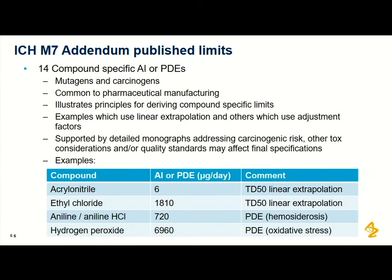It's important to emphasise that these exposure limits are very much based on carcinogenic risk. Sometimes other toxic considerations need to be looked at, so you need to look at the whole data package together. Your final specifications may also be driven by other quality standards. If you have an impurity exposure limit in the milligrams per day range but batch testing shows the impurity is present at micrograms per day, you won't be able to set your limit at milligrams per day — it should be driven by both batch testing data and your exposure limit.